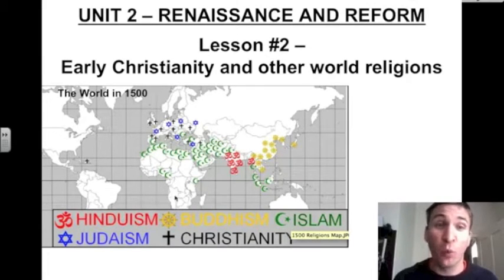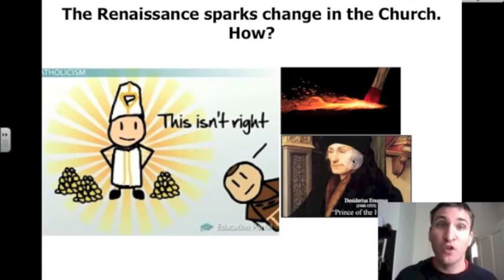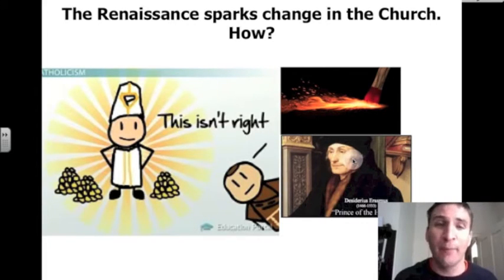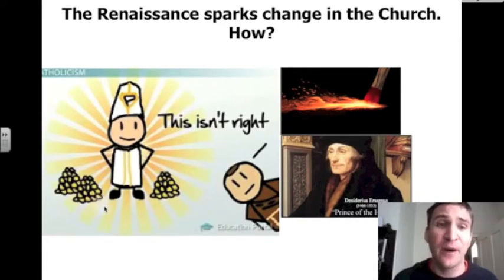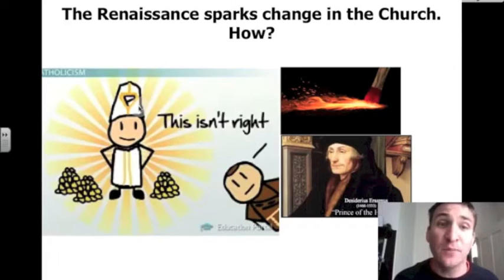In front of you, you see a map of the world in 1500 showing all of the five major world religions and where they are located. The Renaissance sparks change in the church. That's the question we're going to address today after we study the five major world religions in more depth. You see a picture here of the head of the Catholic Church, the Pope, with piles of money around him and a Catholic monk saying, this isn't right. Erasmus was an early Christian critic of the Catholic Church. It had become corrupt and too powerful.